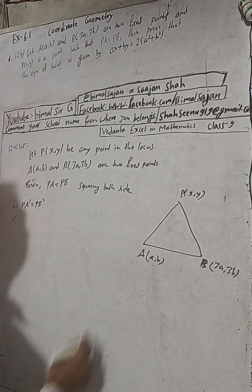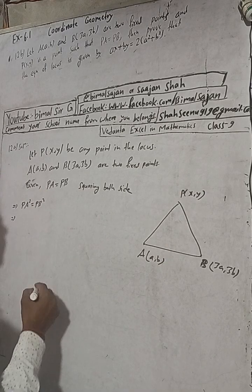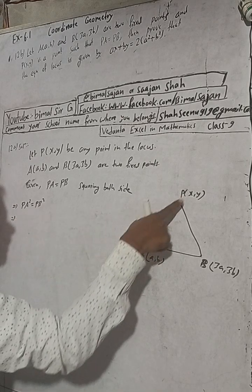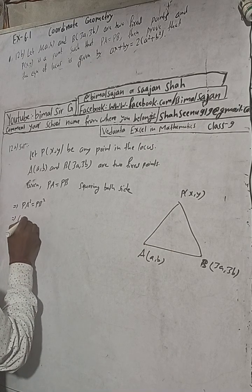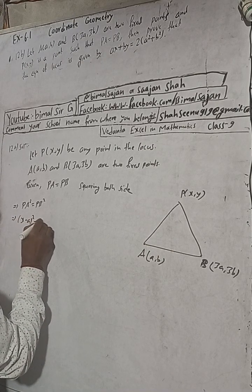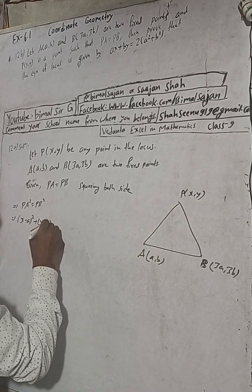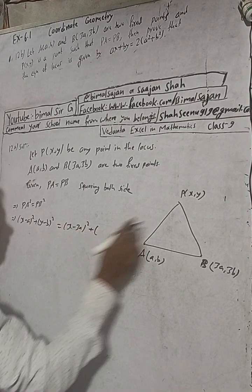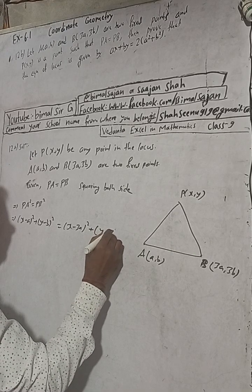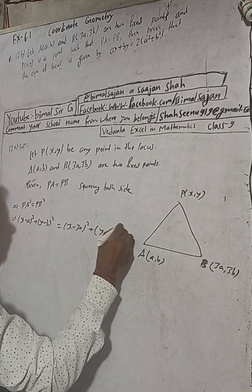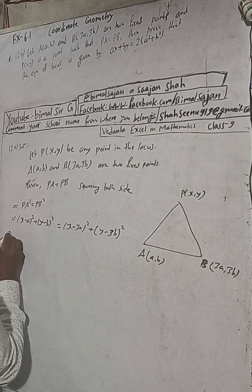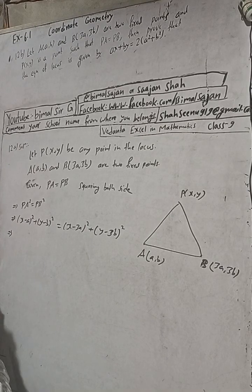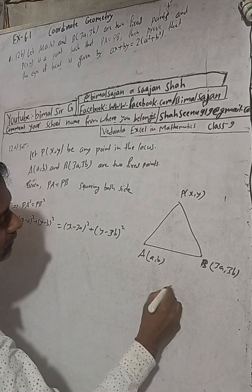Squaring both sides, this implies PA² equals PB². So suppose this is a line; A and B are the fixed points. The coordinates of A are (a, b) and the coordinates of B are (3a, 3b). P is any point in the locus, that is P(x, y). So PA distance equals PB distance, so PA equals PB. Now we can square this distance — directly we can write using the distance formula.